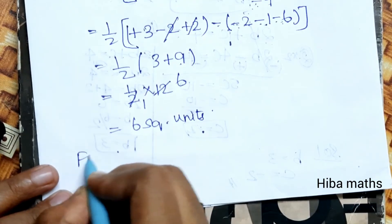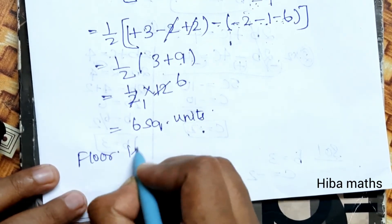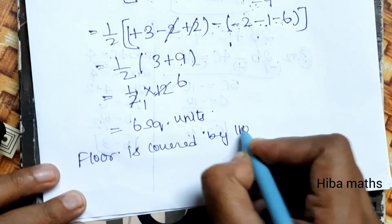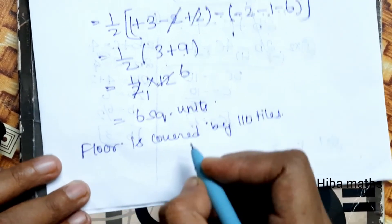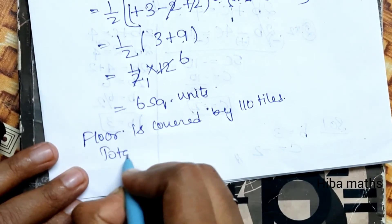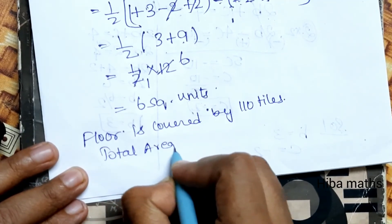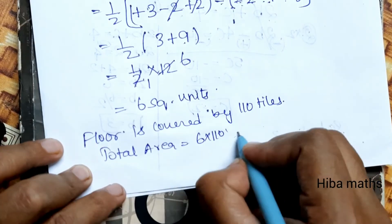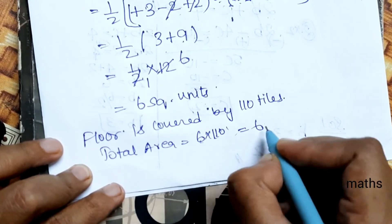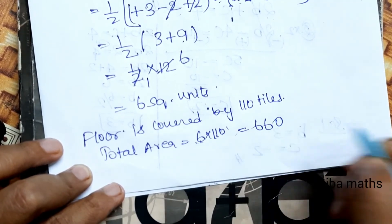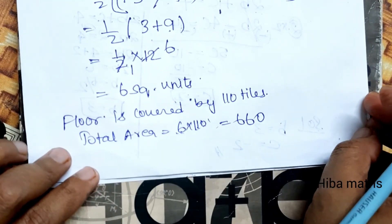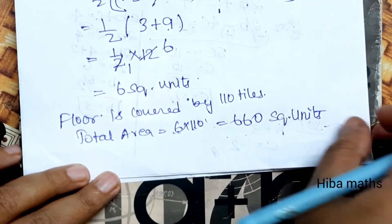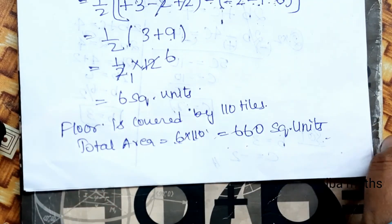So the area of one tile is 6 square units. The floor is covered by 110 tiles, so the total area equals 6 multiplied by 110. 6 into 110 equals 660 square units. The area of the floor is 660 square units. Thank you so much for watching.